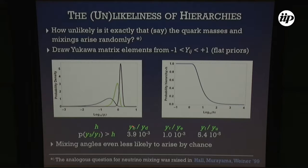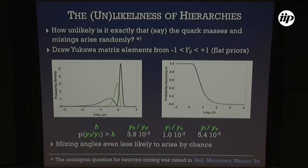Here are the numbers. To have a hierarchy like the down-quark Yukawas, the mildest case, the probability is about 4×10⁻³. For the charged lepton hierarchy it's similarly ~10⁻³, scaling roughly as one over the hierarchy. For the up-type quark hierarchy, the probability is really tiny. And even if you get that by luck, getting alignment of the up and down sectors on top of that is completely non-trivial.